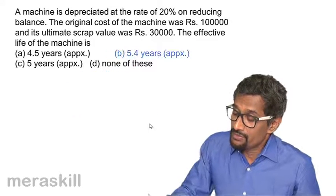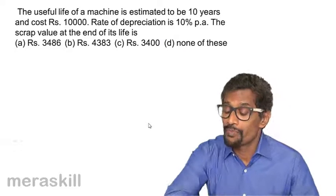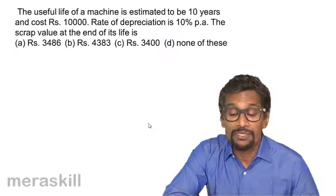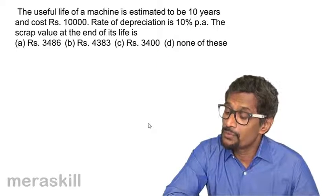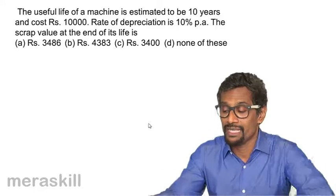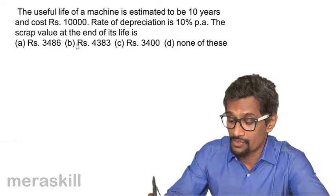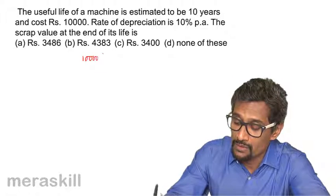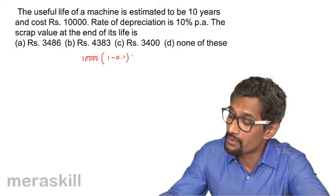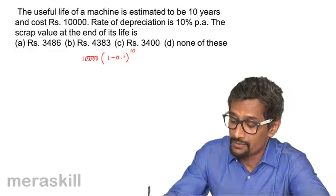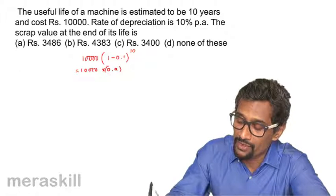The next question: the useful life of a machine is estimated to be 10 years, cost is ₹10,000, and the rate of depreciation is 10%. We need to find the scrap value at the end of its life. Applying the formula: scrap value equals 10,000 into (1 minus 0.1) raised to 10, which is 10,000 into 0.9 raised to 10.